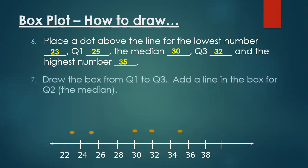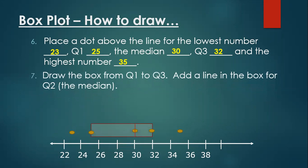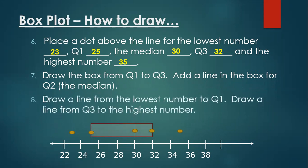Next, we are going to draw a box from Q1, that's the lower quartile, right up to Q3. Next, we draw a line on the median. And lastly, we are going to draw a line from the lowest number to Q1 and from the highest number to Q3.